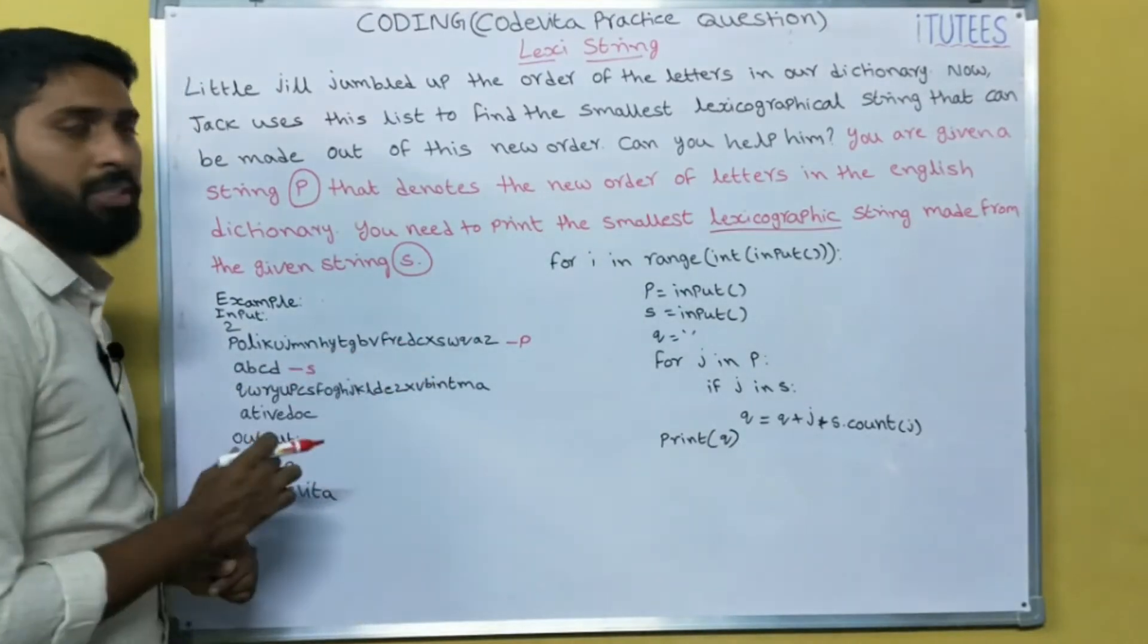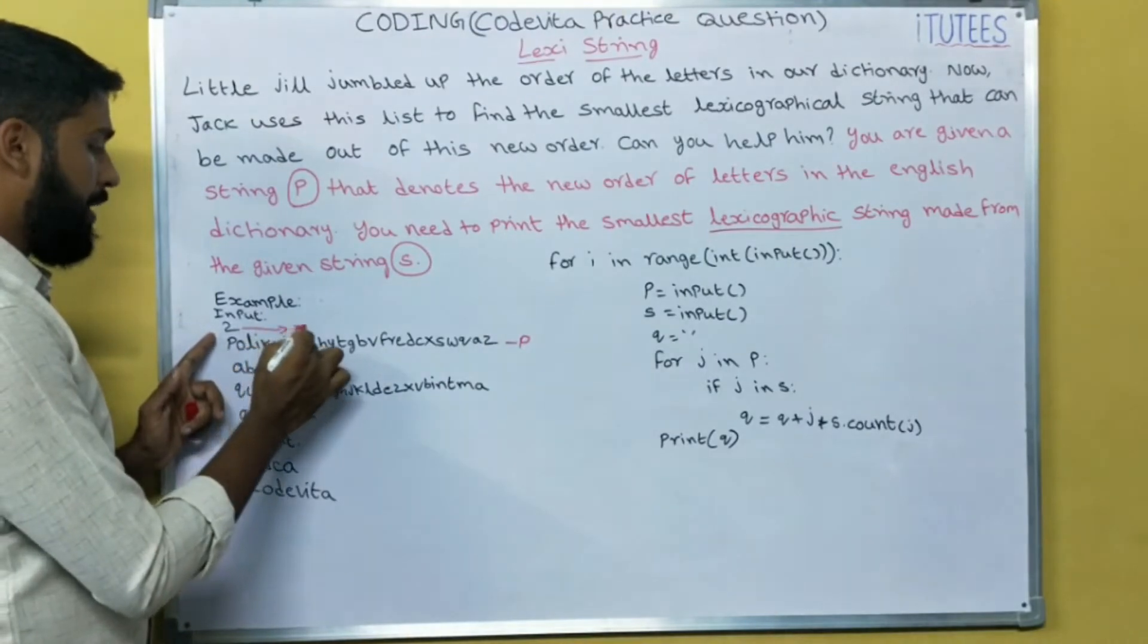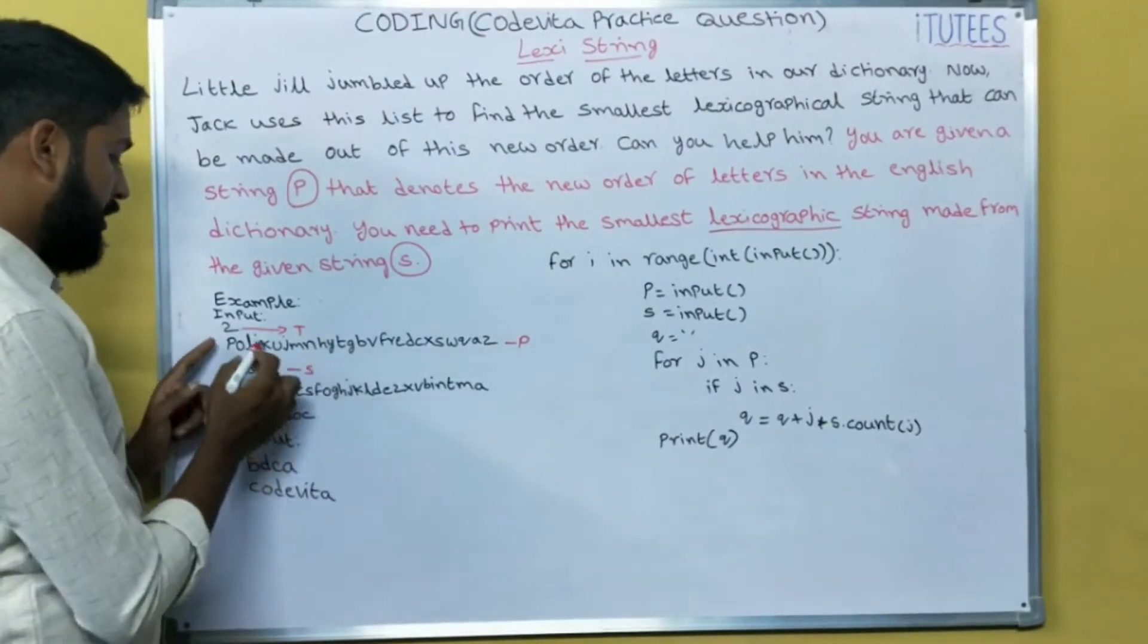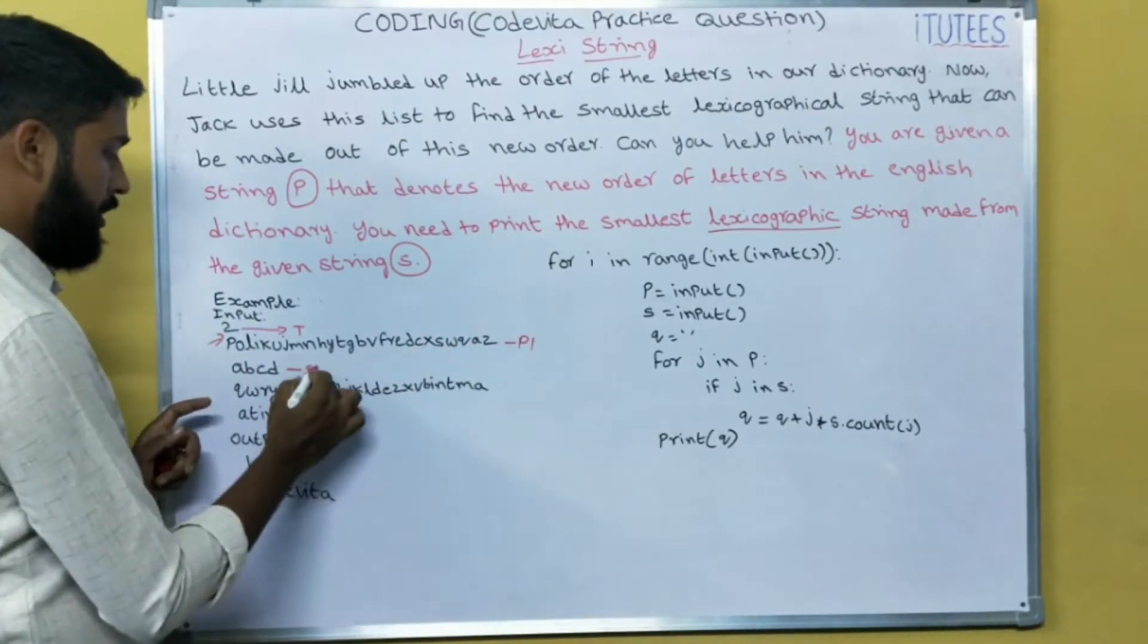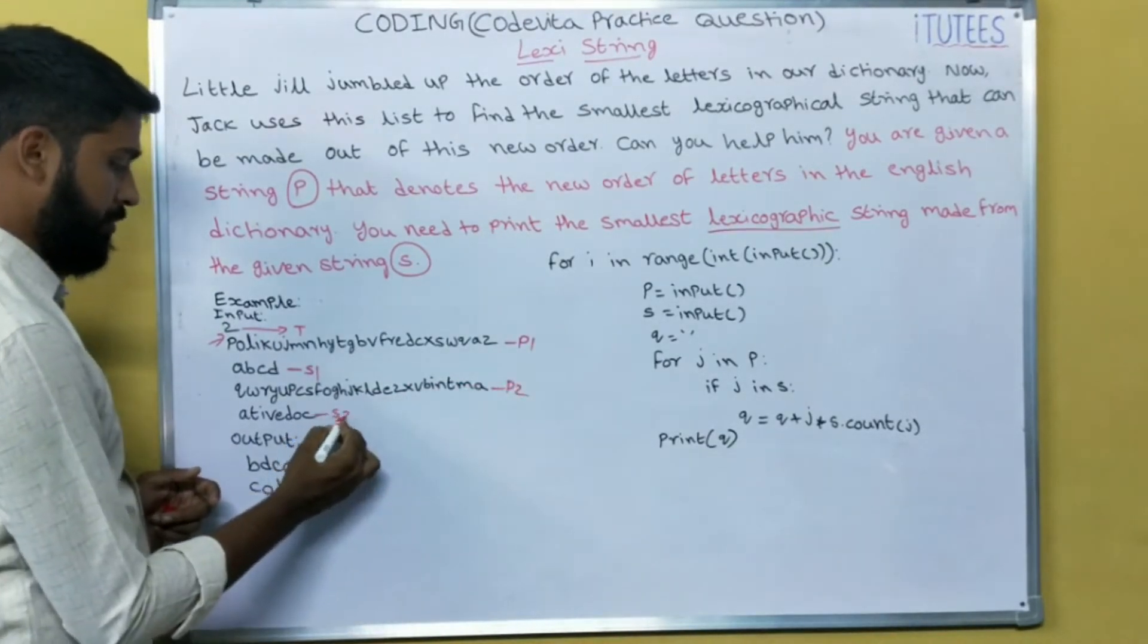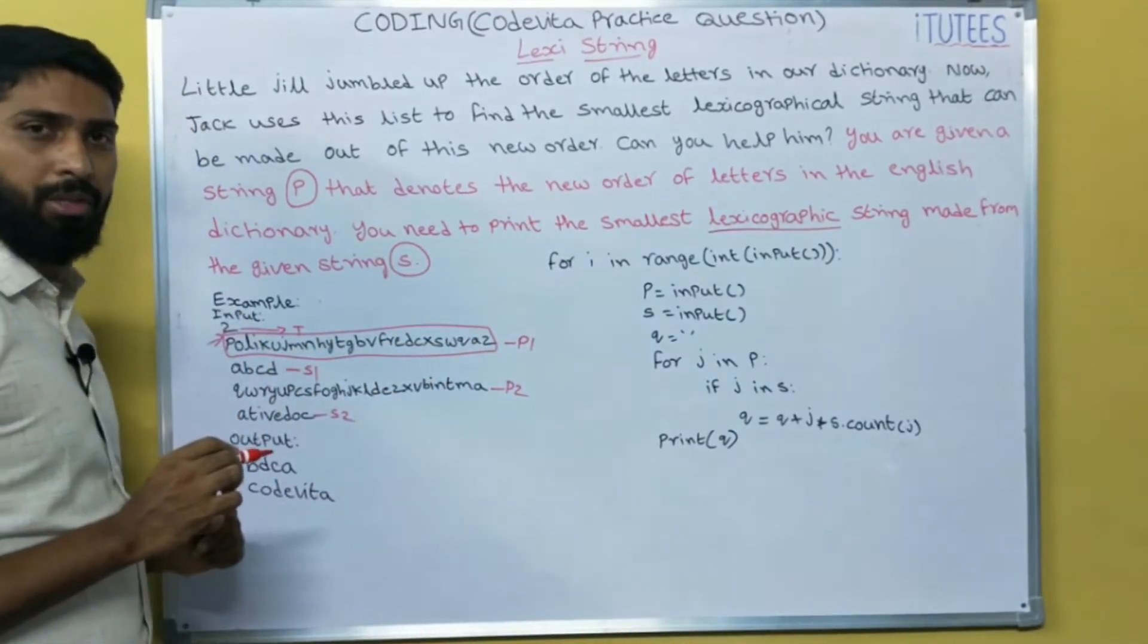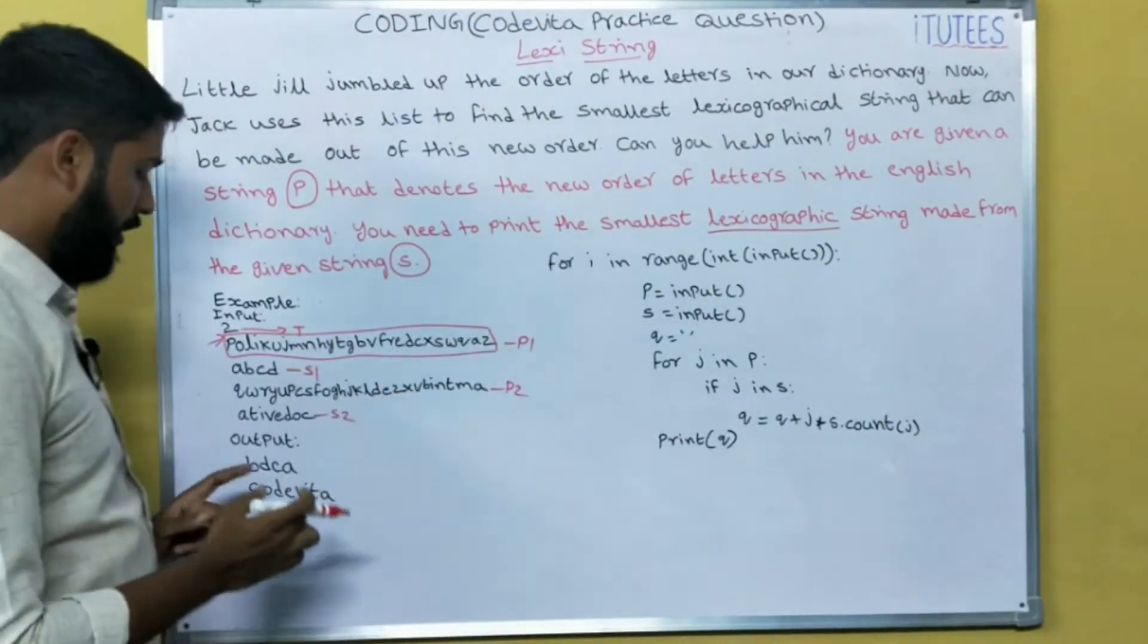Now we can discuss this with one example. 2 means number of test cases, how many test cases we are going to find S for P. Next, we are going to give the two test cases. This is P1, this is S1. Another test case, P2, S2. This is the jumbled order of all the alphabets A to Z, and this is the S.